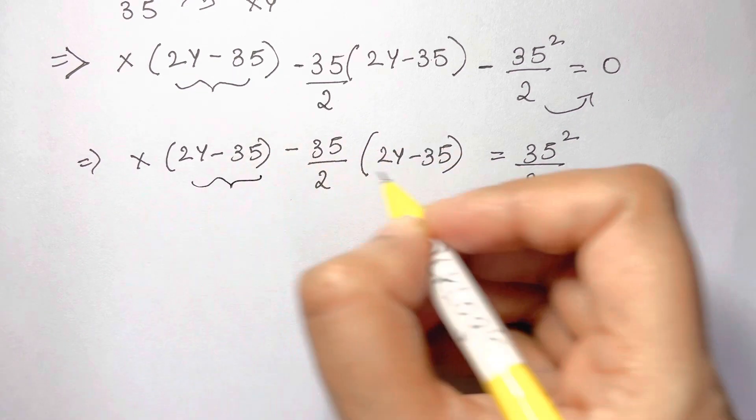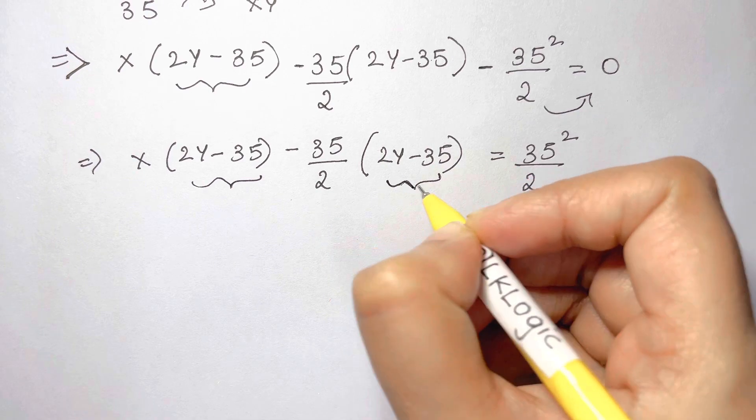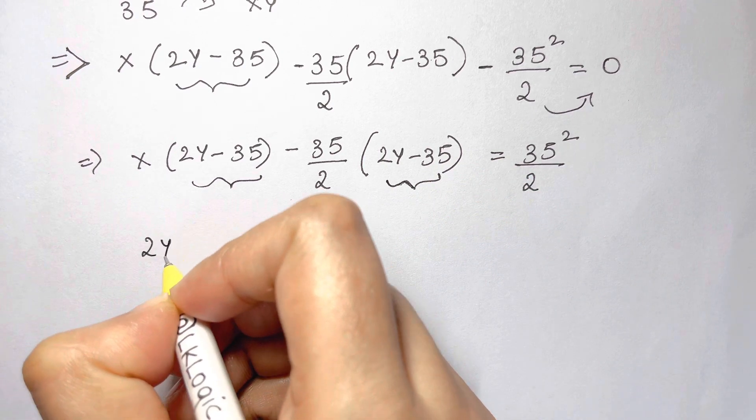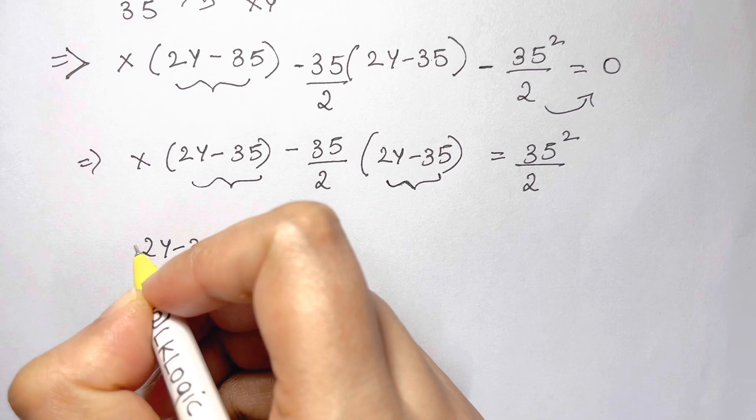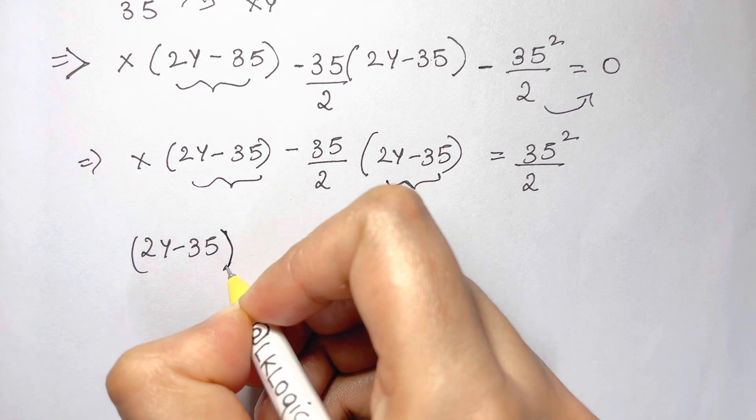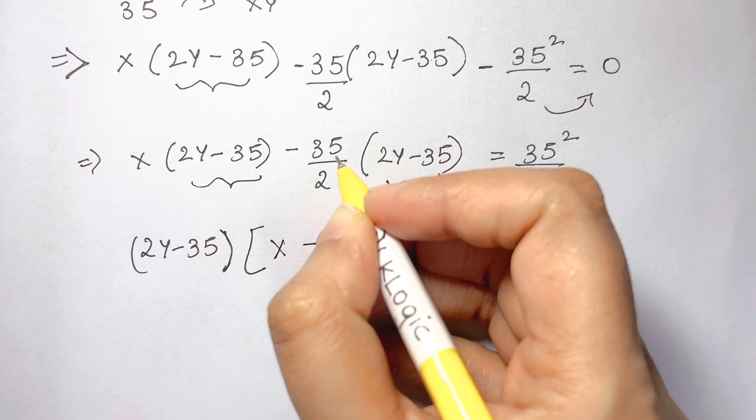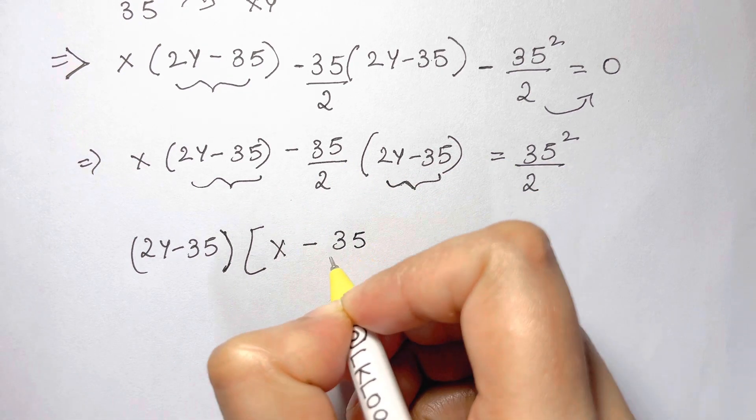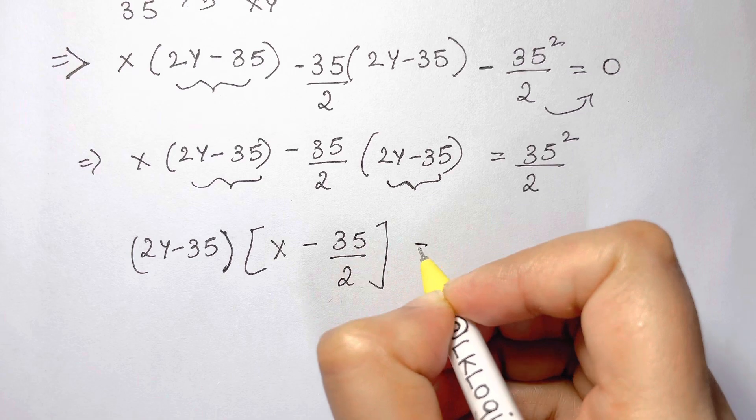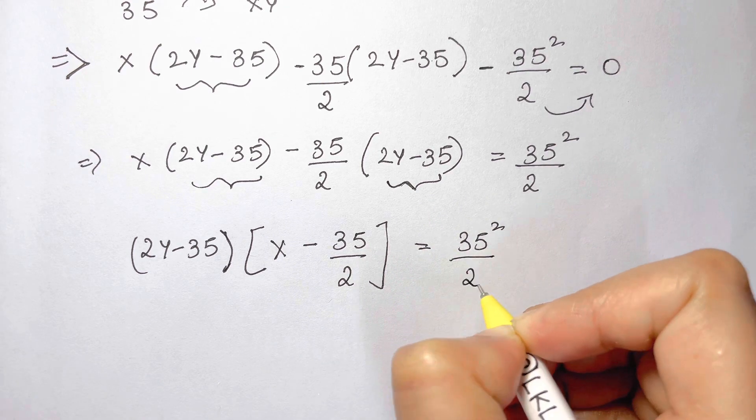Now, we have the common factor. Take it out common. 2y minus 35. When we take out common, what are we left with? x minus 35/2 is equal to 35 square over 2.